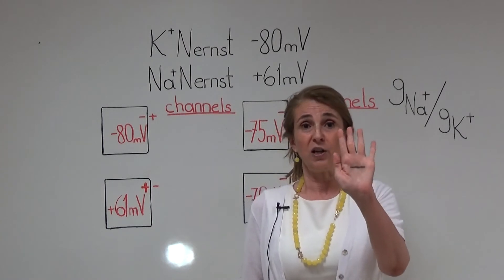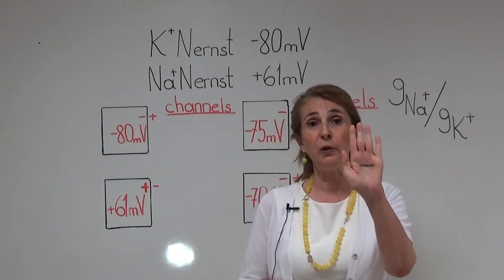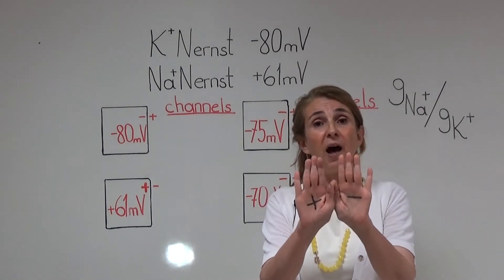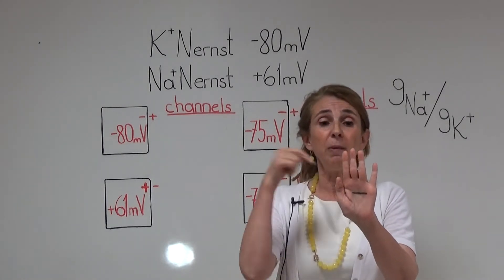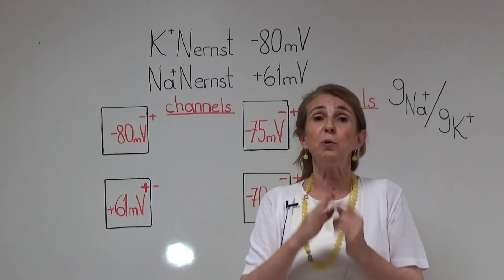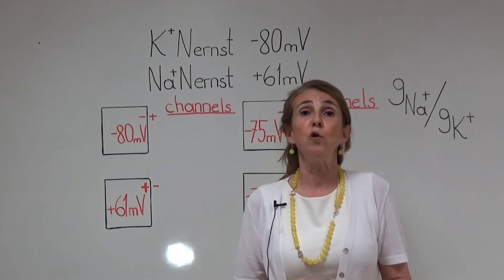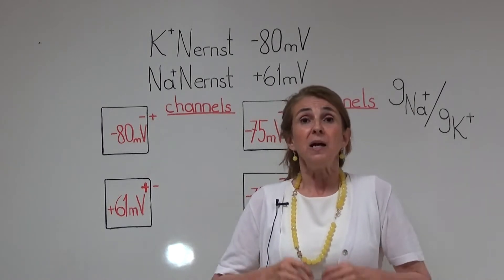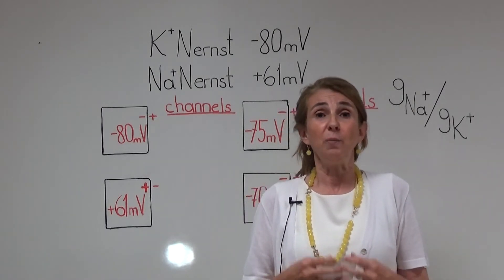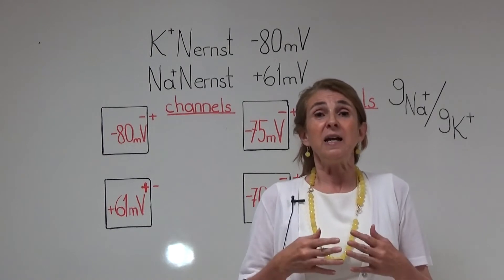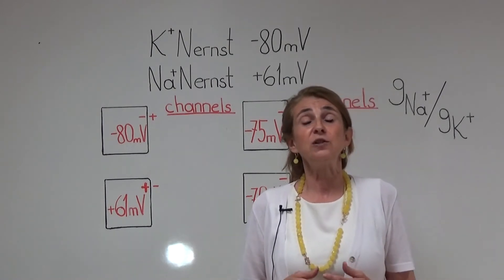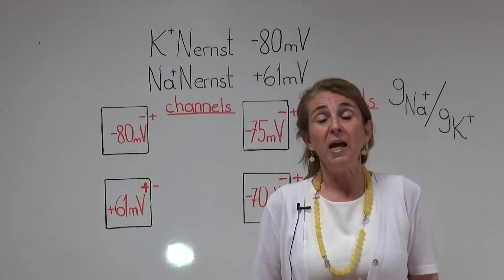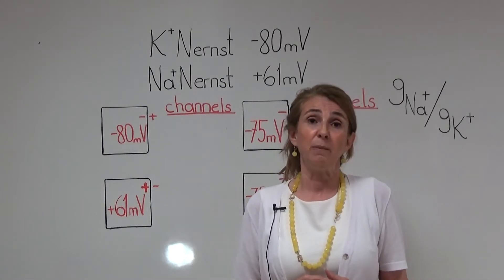If negatively charged ions are higher in number in one area and positively charged ions are higher in number in the other, then we talk about an electrical potential difference or a voltage difference between these two areas. In all cells of our body there is a similar electrical potential difference between the two sides of the cell membrane. This is called resting membrane potential.